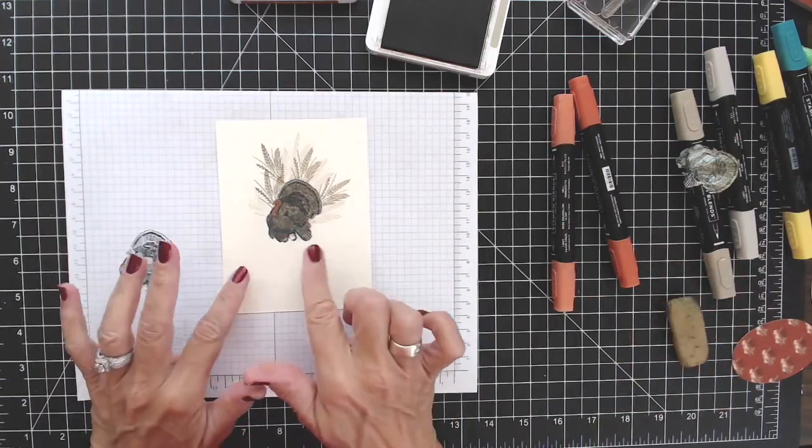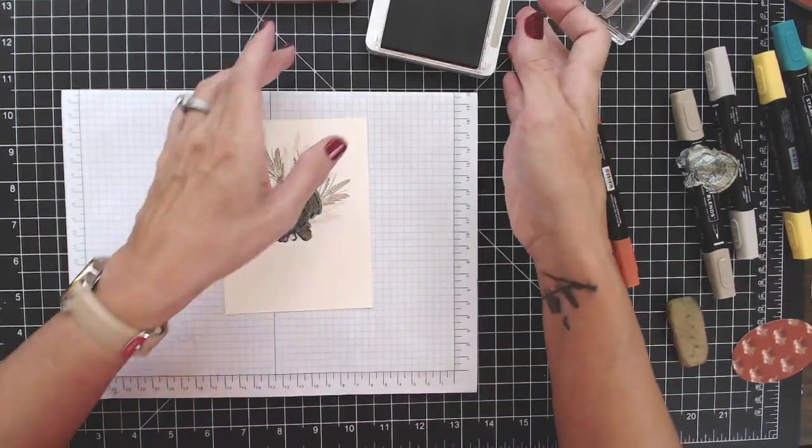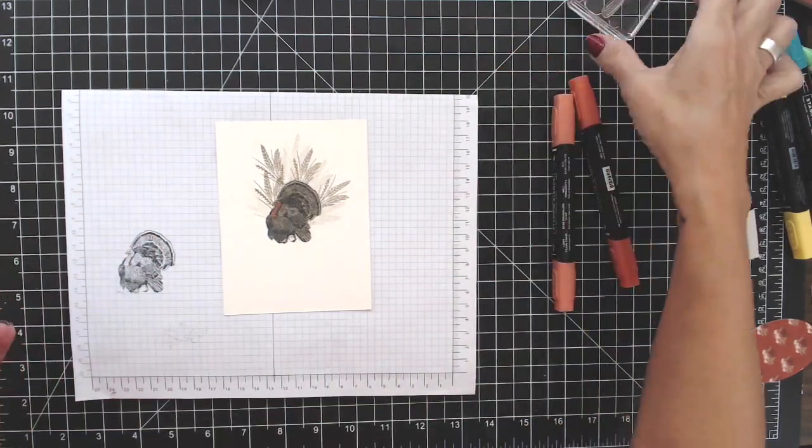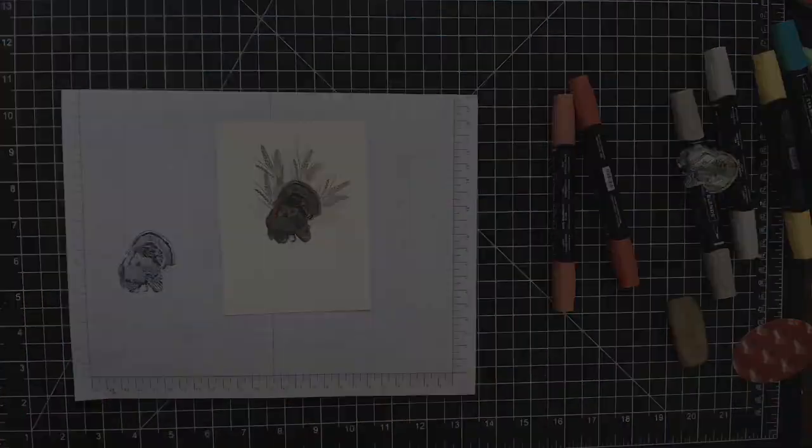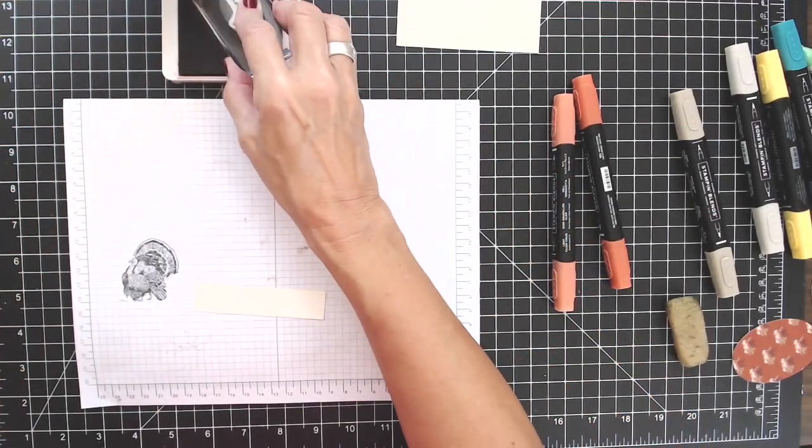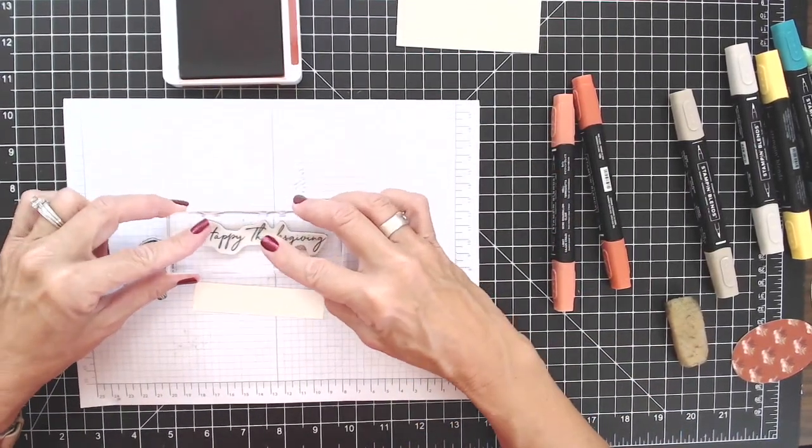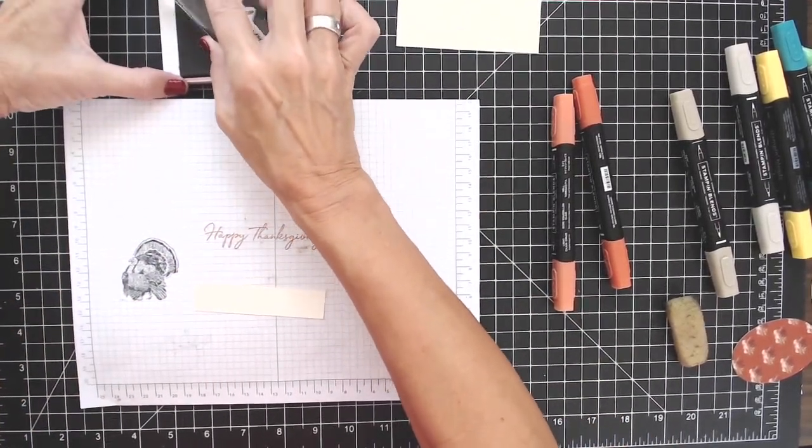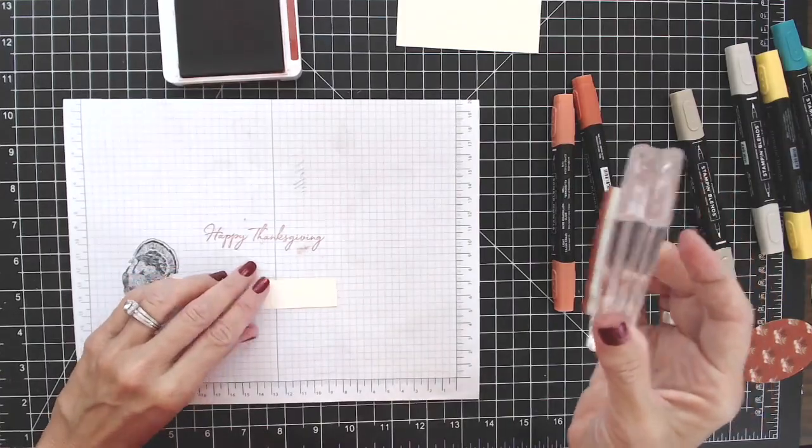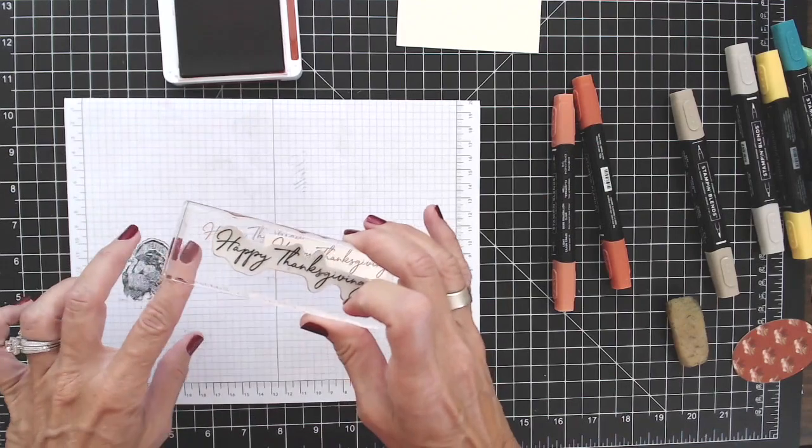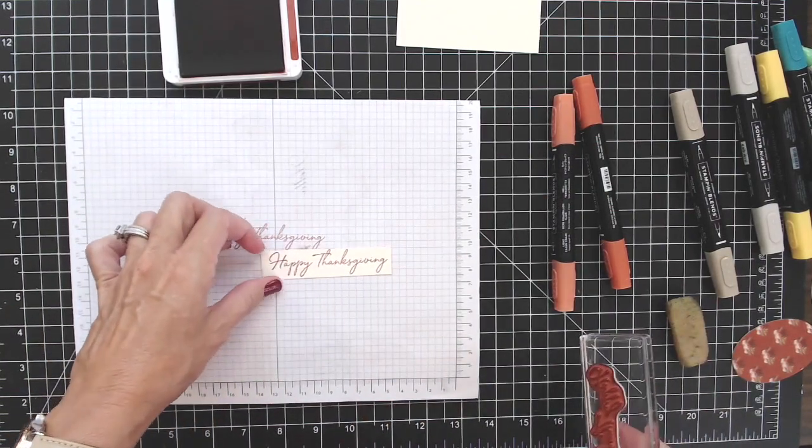Okay, now look what happens when I take that off. Isn't that cool? I did get a little bit of wheat up under his feet, but that's okay because I'm sure that there would be wheat under his feet anyway, right? Okay, I'm bringing in my Cajun Craze and I'm just going to stamp here first to make sure that I have good coverage and that it's even, and then I'm just going to come over. There we go, Happy Thanksgiving.